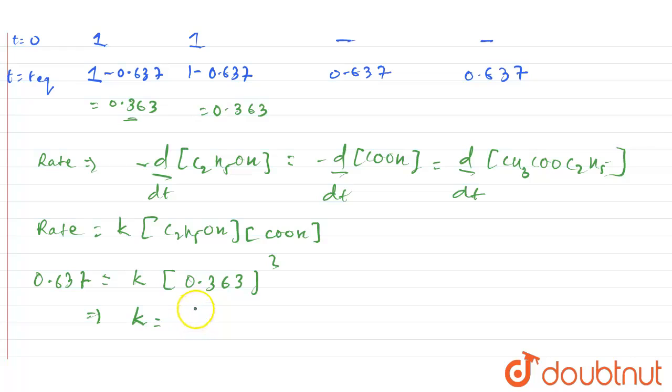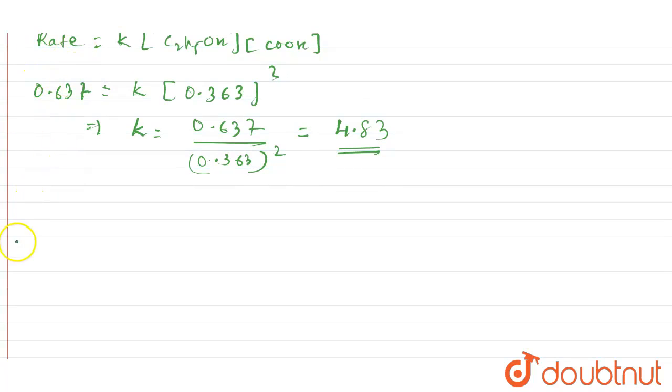And when you do the calculation, you will get the value of K as 0.637 divided by 0.363 the whole square, which will come out to be equal to 4.83. Moving forward for the second case.